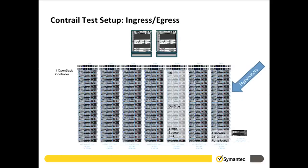One of the first telling architectural differences between the two solutions: with Contrail using Juniper MXs for gateway services, I got back a whole rack of servers. The trade-off is two Juniper routers.